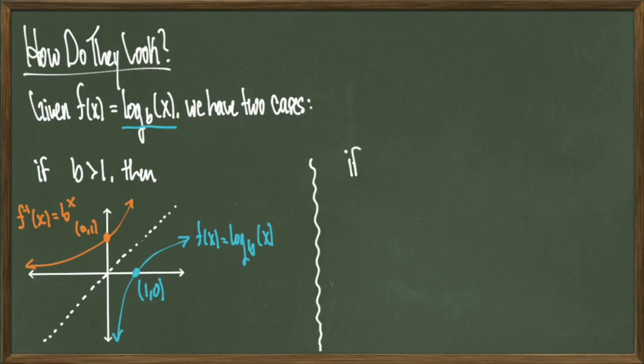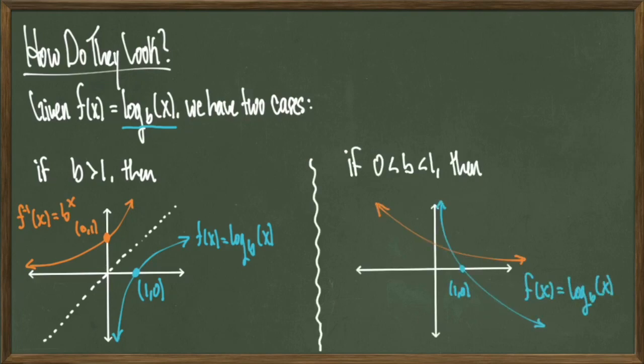In our second case, where b is a positive number less than 1, our logarithmic function looks like this decreasing curve that still crosses the x-axis at the point (1,0). And similarly, if we reflect this function about this diagonal line, we get the function f inverse of x = b^x, the inverse exponential function. So just like before, these look like mirror images of one another.